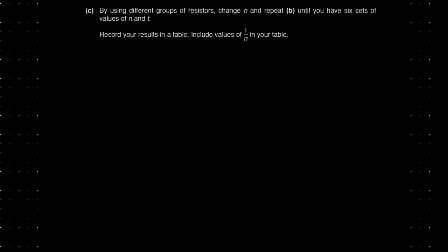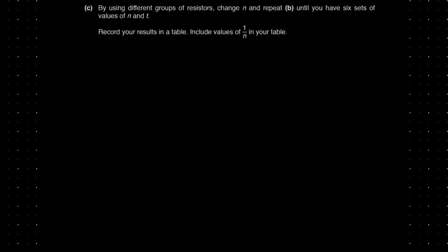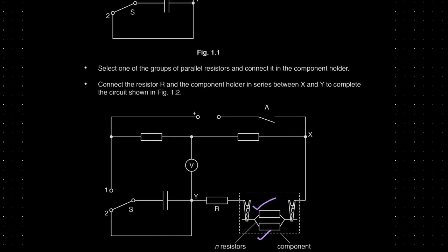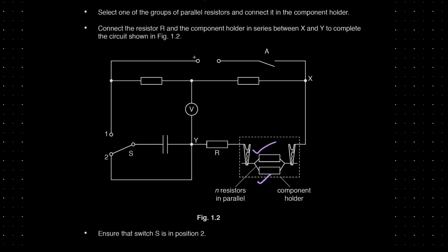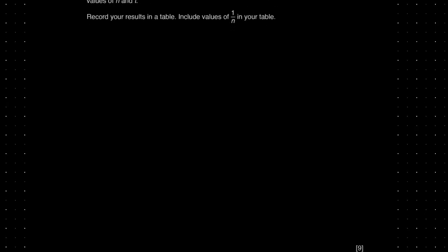By using different groups of resistors, change N and repeat until you have six sets of values of N and T. The component holder contained groups of parallel resistors: two, three, four, five, six, and seven. Just connecting them gives you the different sets of readings — you don't need to do anything else. Maximizing your range across all available groups is important.